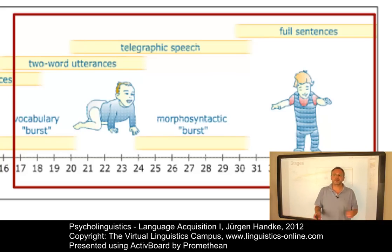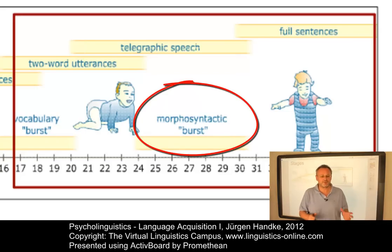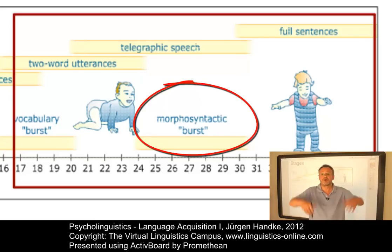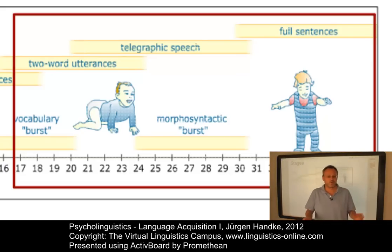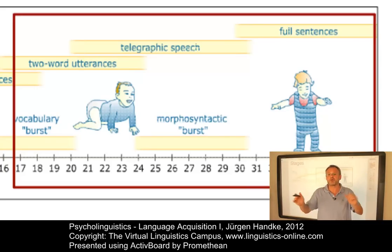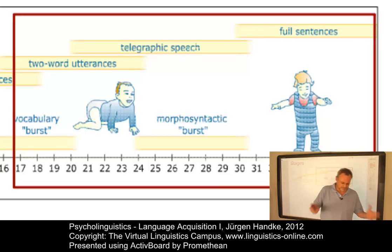Once children have acquired the ability to produce two-word utterances, they start to add function words and grammatical inflections to their utterances. The age of 24 to 30 months has been identified as a period where most children show a kind of flowering of morphosyntax. Towards the age of three, we find a stage of telegraphic speech, where three or more word combinations with few functional or inflectional elements — like 'milk, all gone' — occur, and then even full sentences with increasing utterance length and complexity.